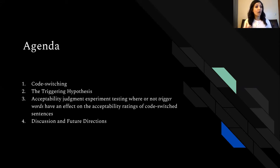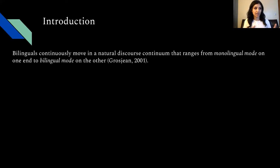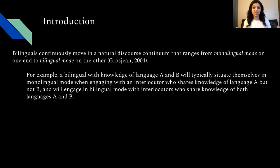Since Grosjean 2001, it's been assumed that bilinguals naturally move along a discourse continuum ranging from monolingual mode on one end to bilingual mode on the other. Bilinguals situate themselves somewhere along this continuum depending on various factors, including the interlocutors they're talking to. For example, a bilingual with knowledge of languages A and B will typically be in monolingual mode with an interlocutor who only shares language A, but in bilingual mode with interlocutors who know both languages.